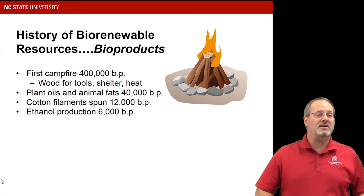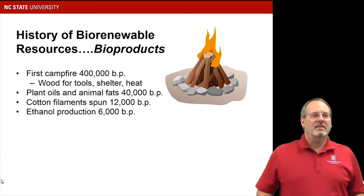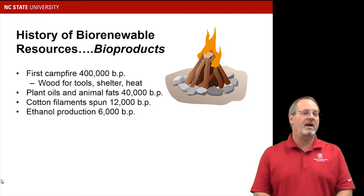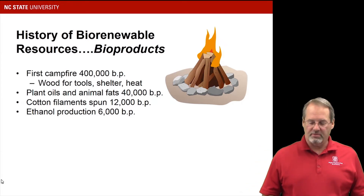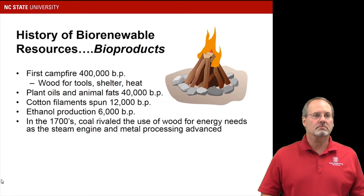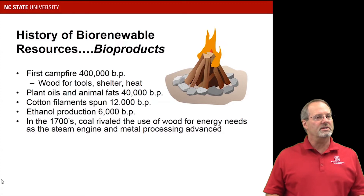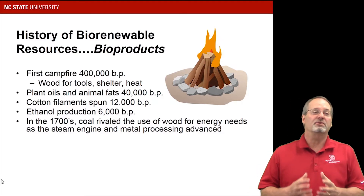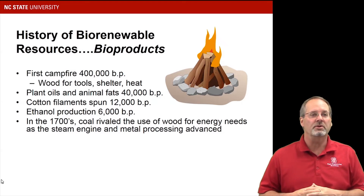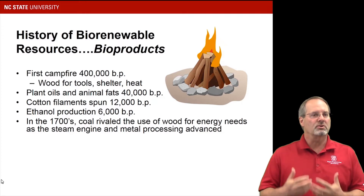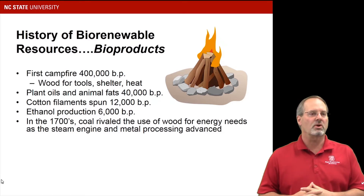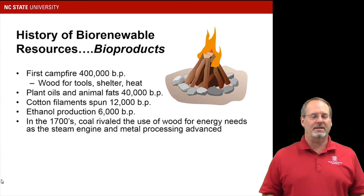Ethanol production: back in the Egyptian days, they learned how to ferment organic material and produce ethanol, which had the benefit of not spoiling in the same way as other foods and drinks. In the 1700s, people started to use coal, which began to rival the use of wood for energy. Coal is the first example of a widespread non-renewable material that society used widely, and the industrial revolution with steam engines really accelerated its use.